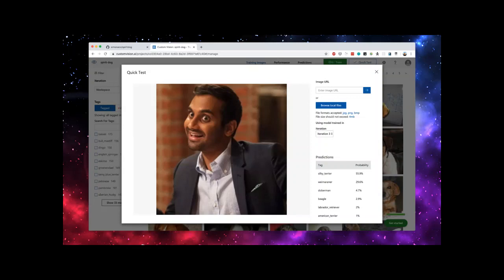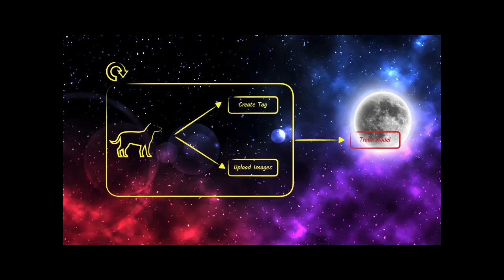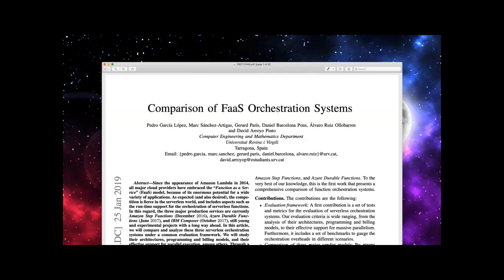You can do all of this manually, but there's also an API to run all model training steps using code. Given a dataset of dog images, we iterate over each dog breed, create a tag in Custom Vision AI, upload images for that breed, and once all tasks are completed, train the model so we can run predictions. Before seeing the code, let's look at some properties of orchestration systems.